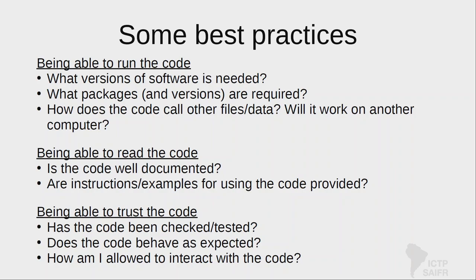If you have specific version numbers, you'll be able to go back and run it exactly as the analysis was intended. Also think about how code interacts with different files. If you're loading data from your local system on a Windows machine with a path like C:/folder/folder, that might not work on someone else's computer. You need to change how you're accessing that data or give instructions to the user to help them alter that piece of code. Is the code documented? You can make it easy by giving instructions or examples on how to run the code.